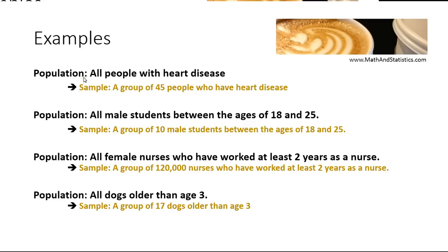Now let's look at some examples of starting with a population and then coming up with a sample that could be collected from that population. An example population might be all people with heart disease — a possible sample could be a group of 45 people who have heart disease. Notice that this sample has a sample size of 45, and it only includes people with heart disease because those are the people in our population of interest. The sample always comes directly from the population. In the second example, the population is all male students between the ages of 18 and 25, and we can grab a sample of 10 male students in that age group. This is a small sample size, and given that small sample, the research is not as accurate in estimating the true population.